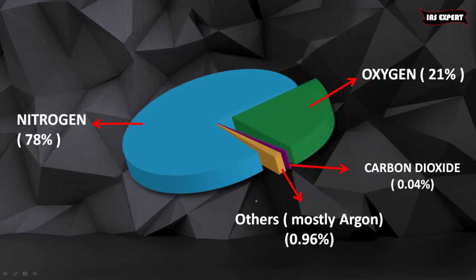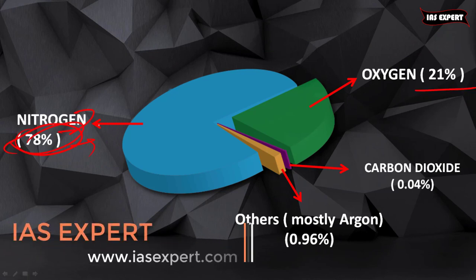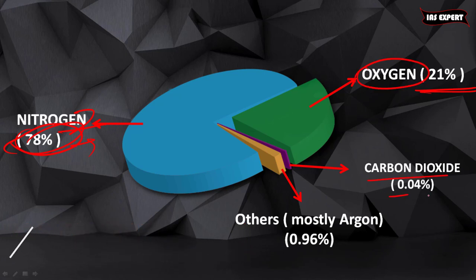Coming to the composition of air: 78% of air consists of nitrogen and 21% of air consists of oxygen. Carbon dioxide occupies 0.04% and other gases, mostly argon, consist of 0.96%.